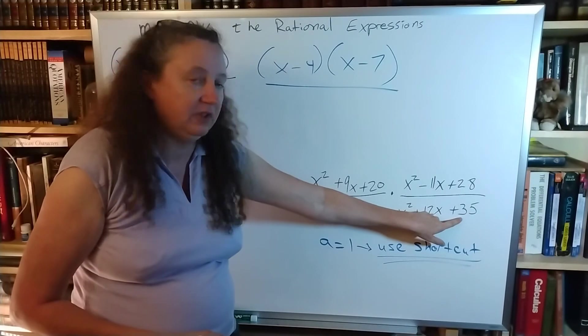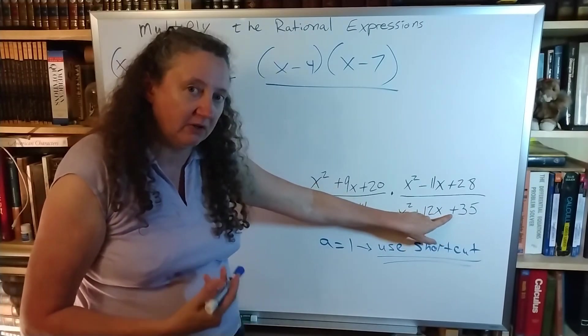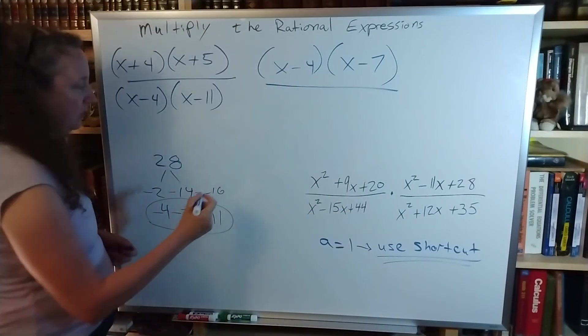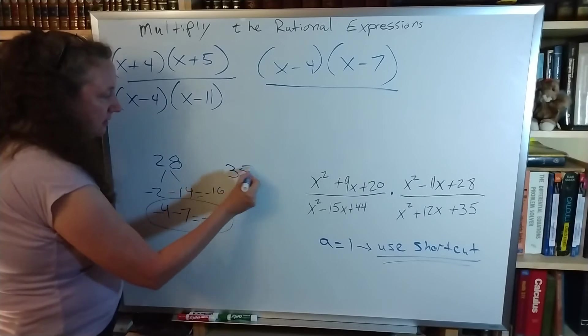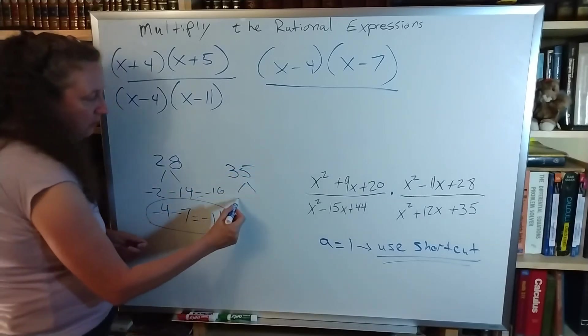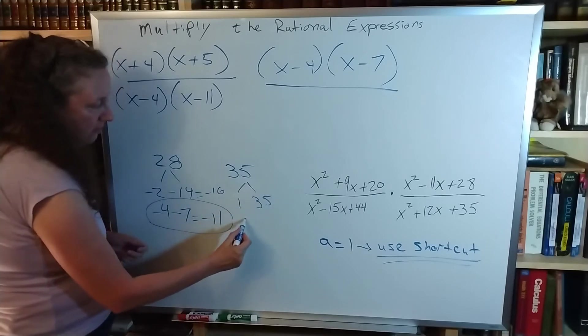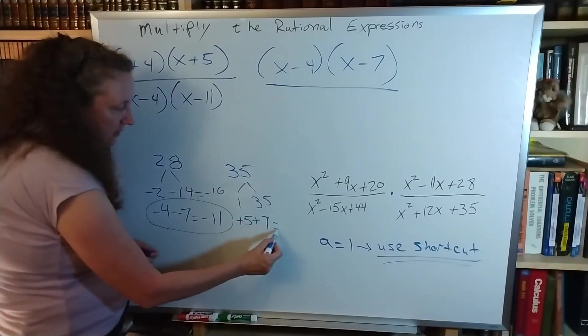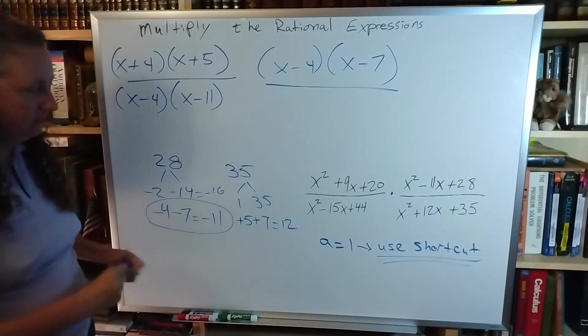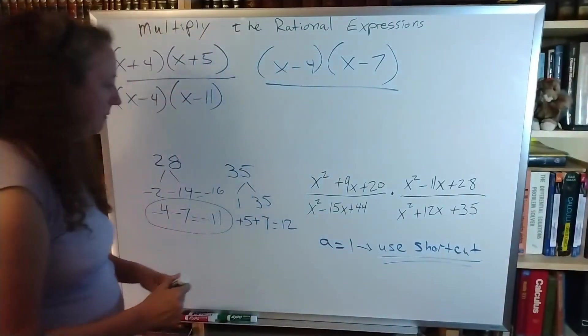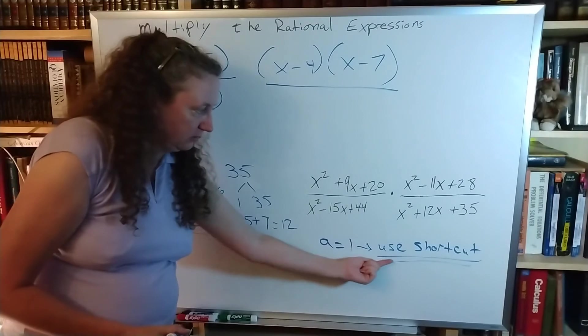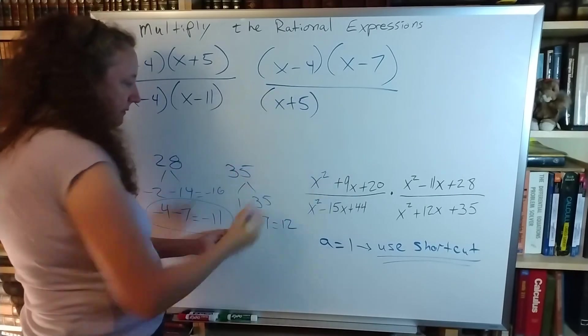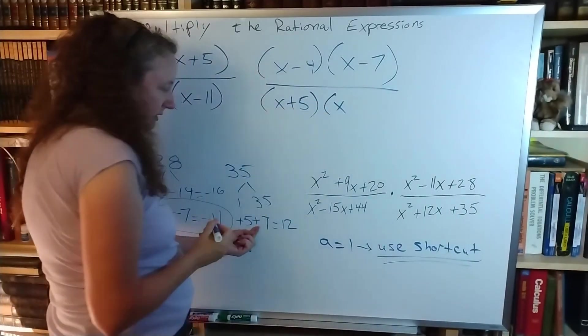Last one here. C is 35. It's positive. So my signs are the same. B is positive. So my sign is positive. So I take my 35. And that is either 1 and 35 or 5 and 7. My signs are positive. And I get 12. So 12. Good to go. A is 1. So I'm using my shortcut. x plus 5 times x plus 7.